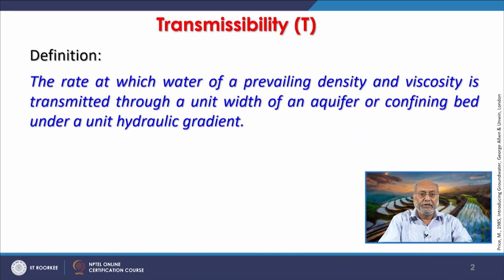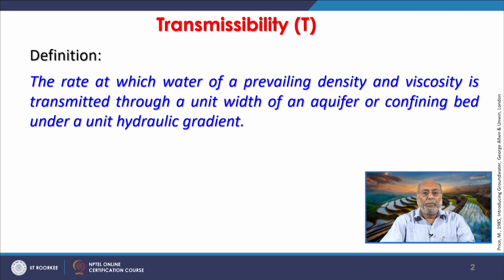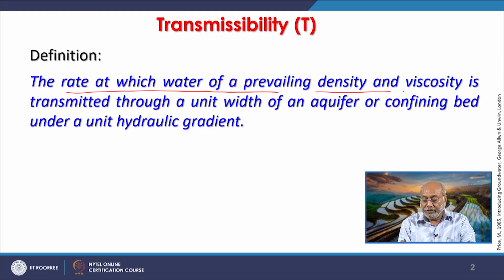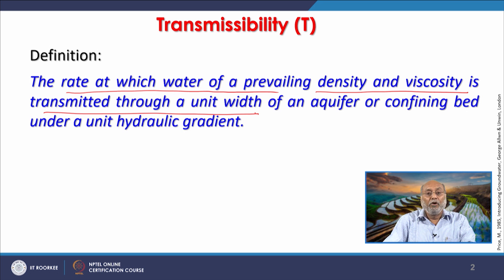Transmissibility is denoted by T. It is the rate at which water of a prevailing density and viscosity is transmitted through a unit width of an aquifer or confining bed under a unit hydraulic gradient.